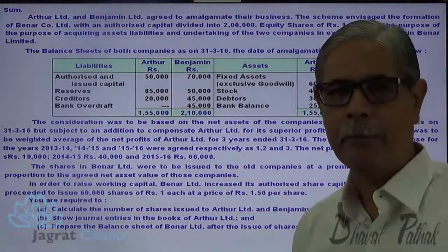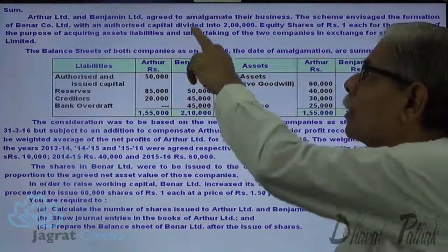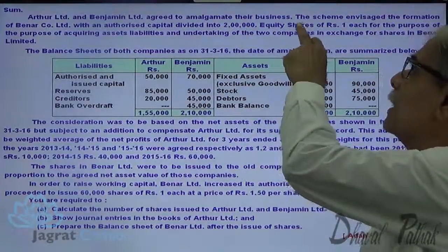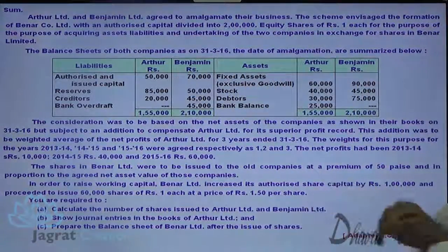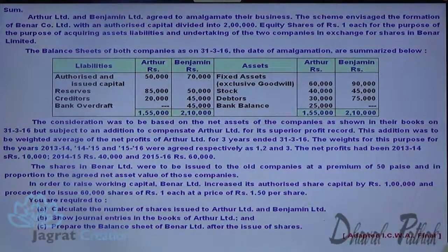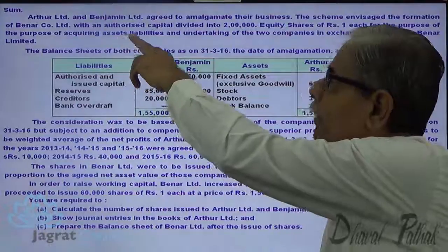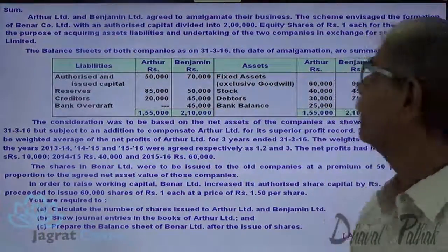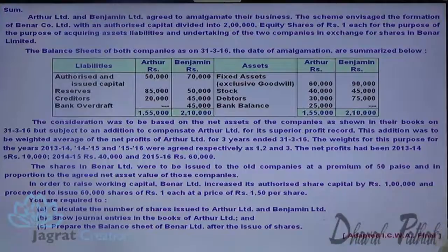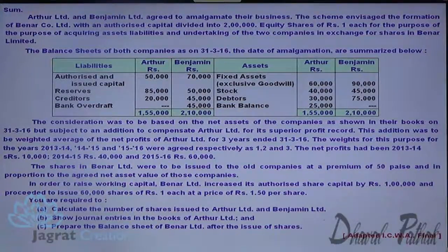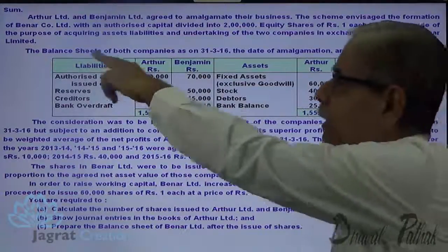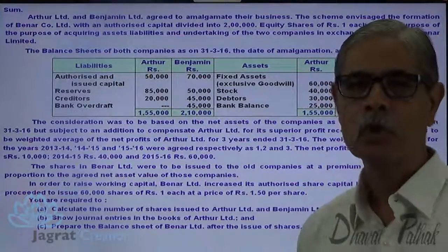Arthur Ltd. and Benjamin Ltd. agreed to amalgamate their businesses. The scheme envisaged the formation of Banner Ltd. with an authorized share capital divided into 2 lakh equity shares of rupees 1 each, for the purpose of acquiring assets, liabilities and undertaking of these 2 companies in exchange of shares in Banner Ltd.